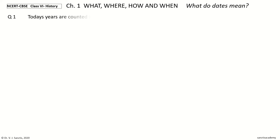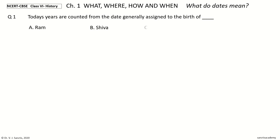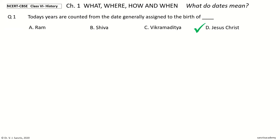Today's years are counted from the date generally assigned to the birth of — your options: Ram, Shiva, Vikramaditya, Jesus Christ. Your time to choose. And the answer is Jesus Christ.